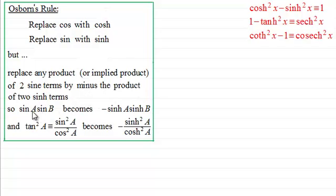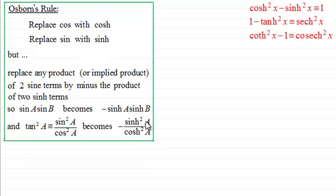So for instance, if you had sine A times sine B, then replacing sine A and sine B with sinh A, sinh B — what we've got here is a product of two sines, so we have to put a minus in front of it. And when it comes to an implied product, for instance tan squared A — remember tan squared A is sine squared A over cos squared A — we've got a product of two sines, so we would have a negative and it becomes sinh squared A over cosh squared A. In other words, tan squared A would become minus tanh squared A.